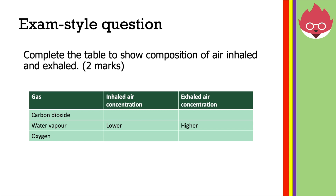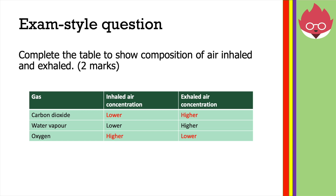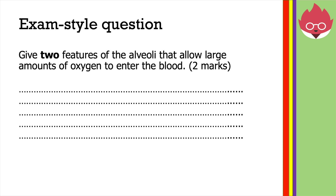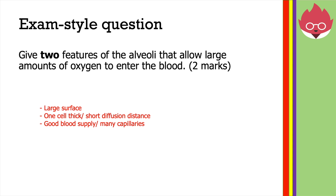Let's now have a look at an exam-style question. Complete the table to show the composition of air inhaled and exhaled. In the first column, the missing answers are lower and higher. In the second column, the missing answers are higher and lower. In the next question: give two features of the alveoli that allow large amounts of oxygen to enter the blood. You can mention any two of the following: they have a large surface area; they are one cell thick or have a short diffusion distance; or they have a good blood supply or many capillaries.